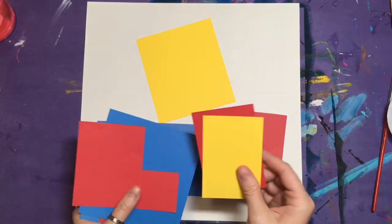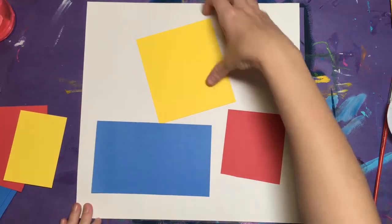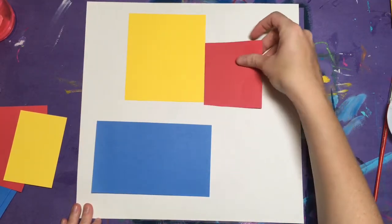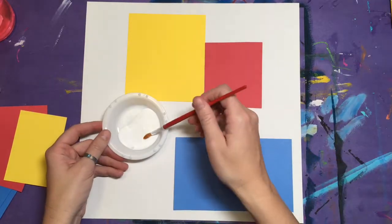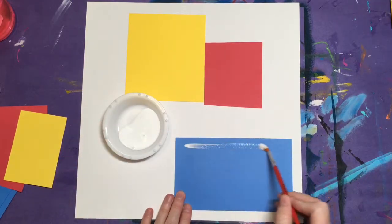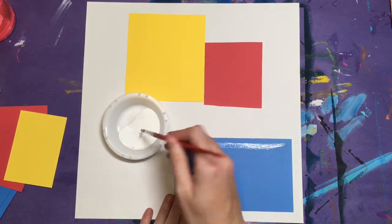Choose at least one of each of the colors red, yellow, and blue. You can have more if you want but you have to have at least one of each. Lay them on your white background until you have them arranged just the way you want them.